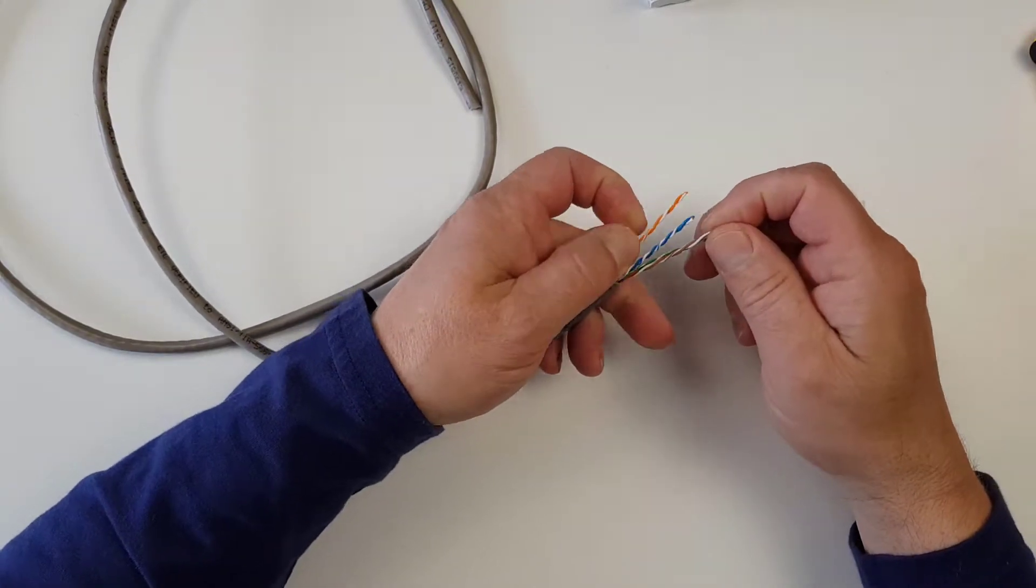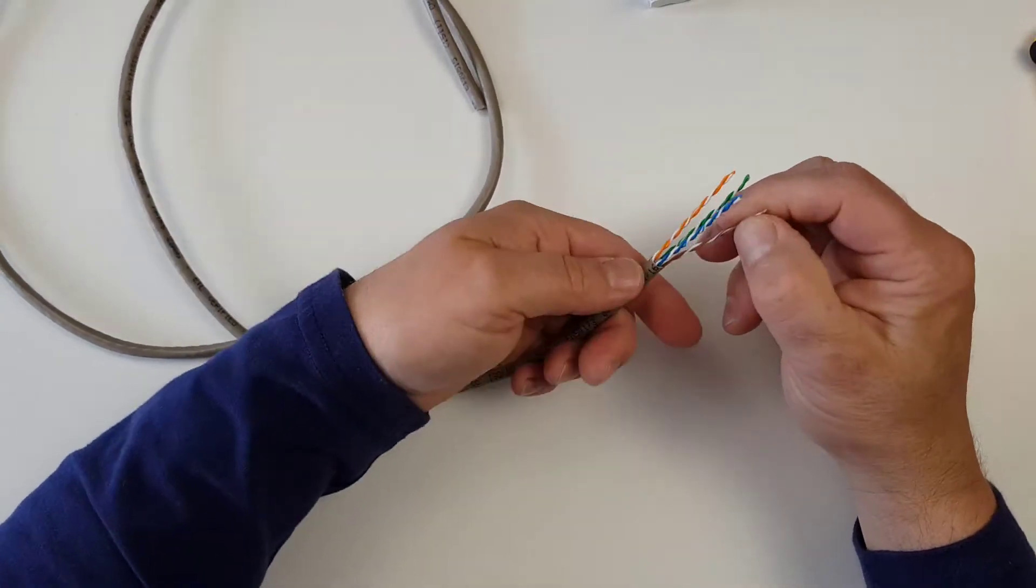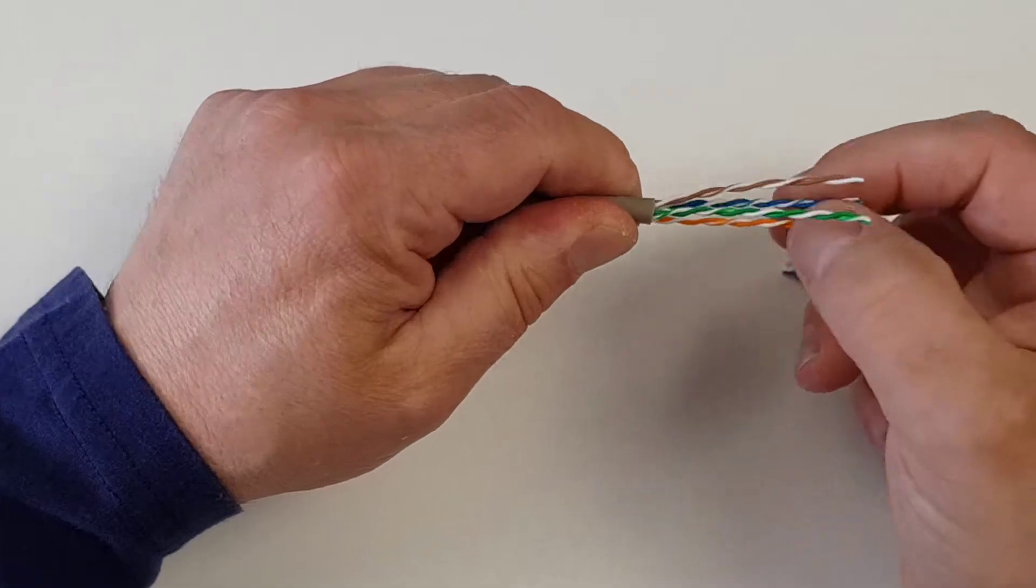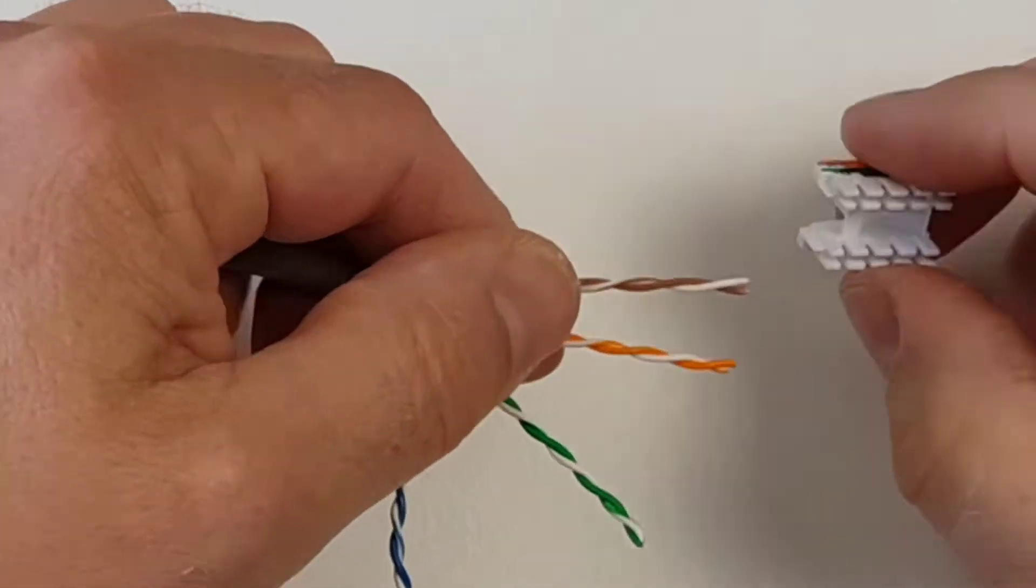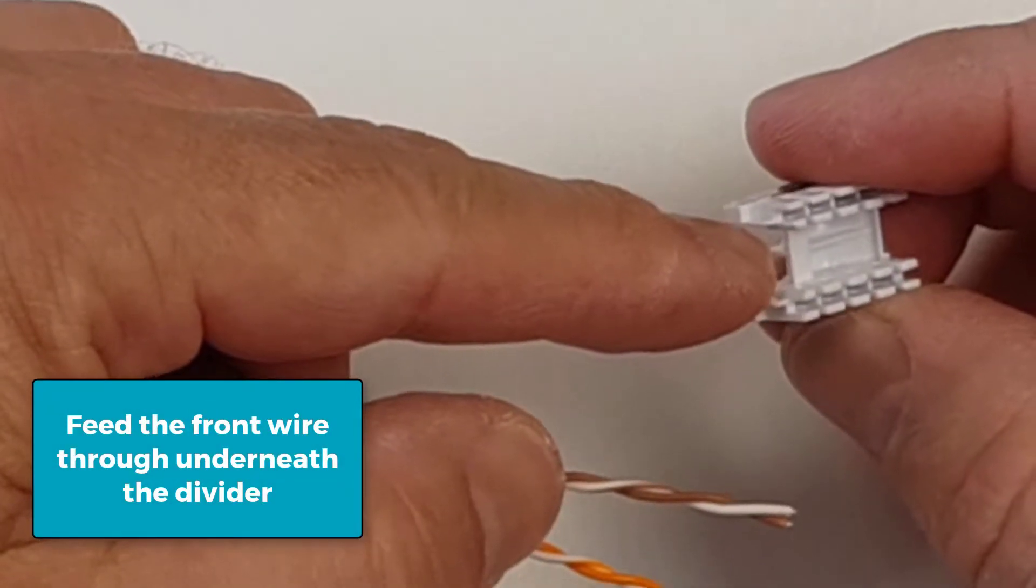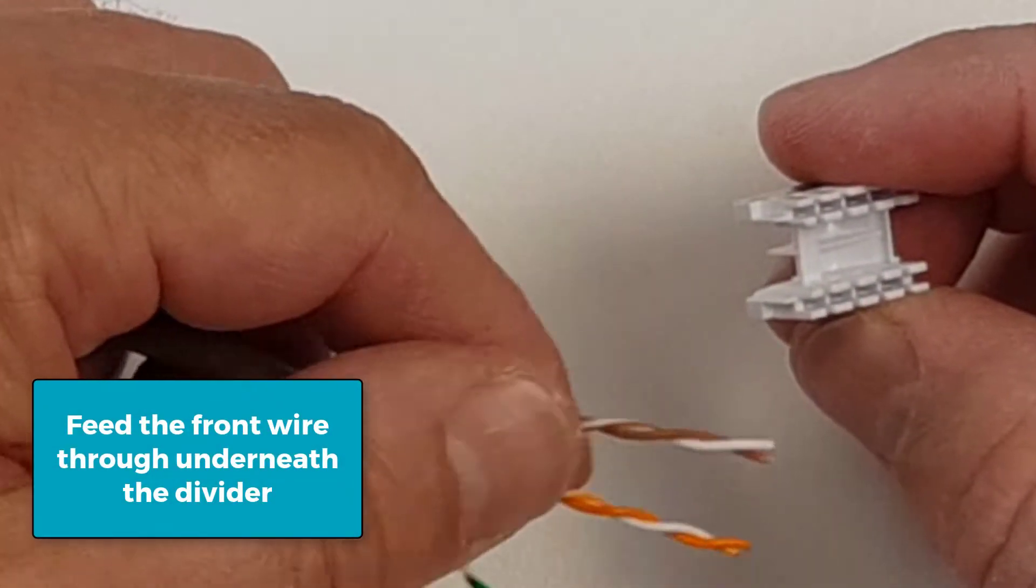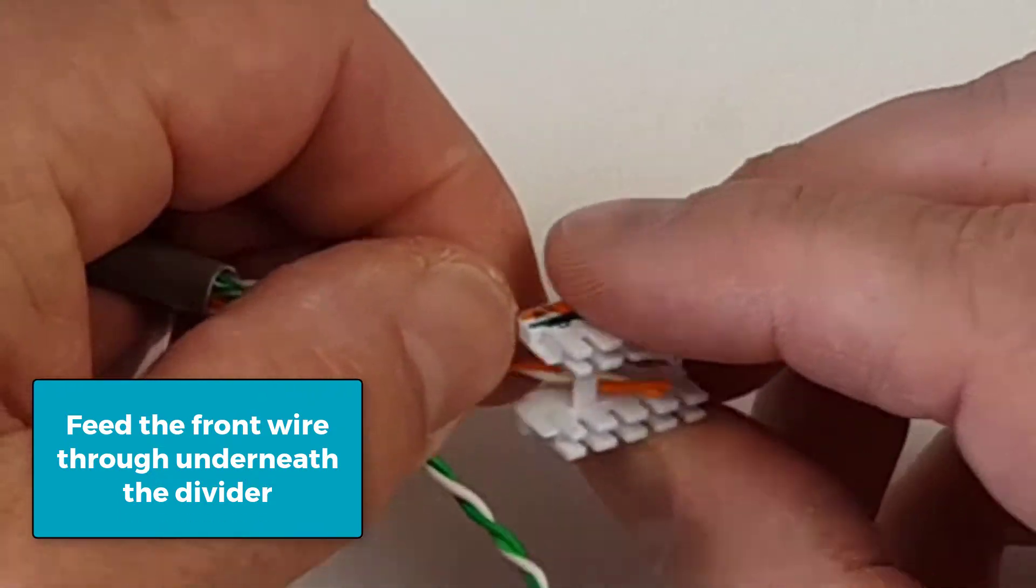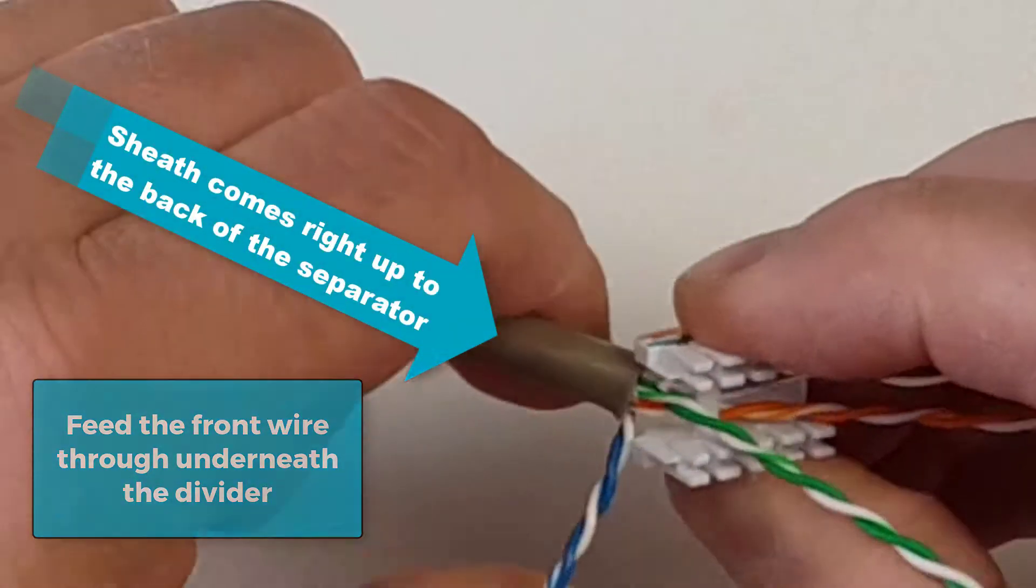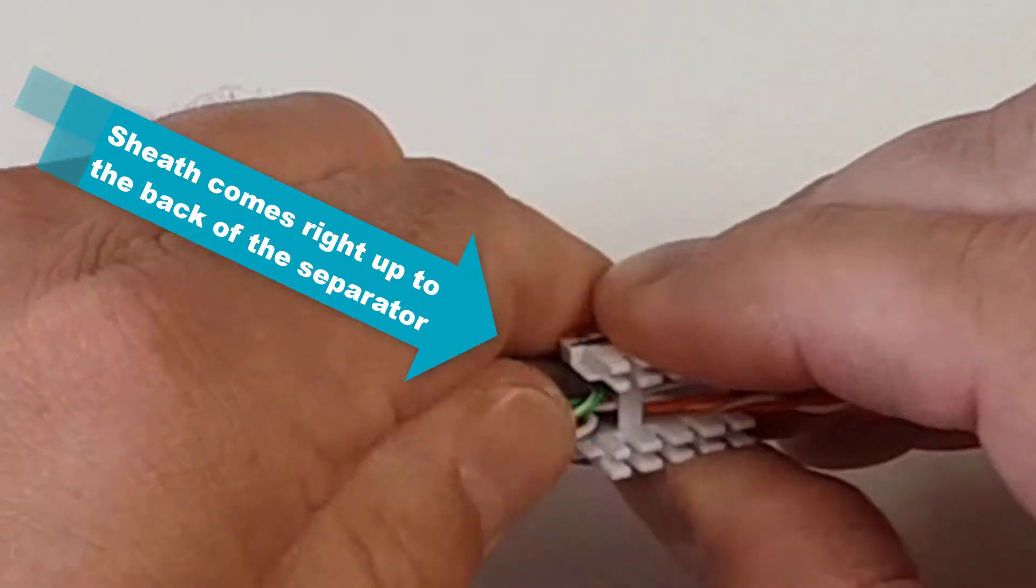So I will take my orange and brown first. I am going to feed those in underneath this spacer that sits in the middle of the cable guide and bring those up right up to the front there.